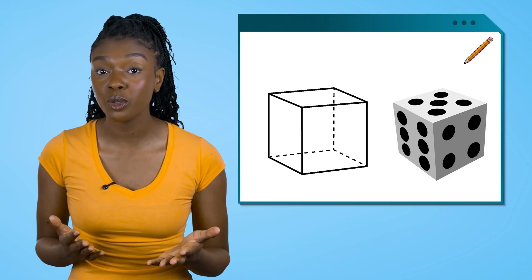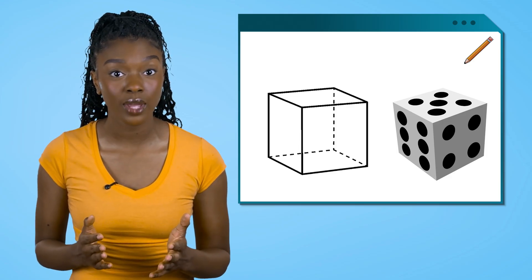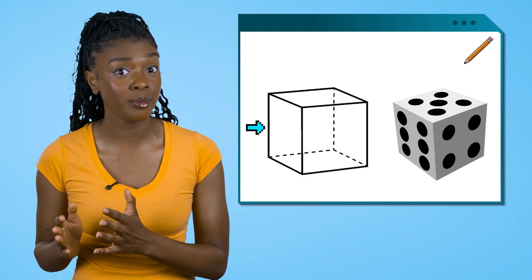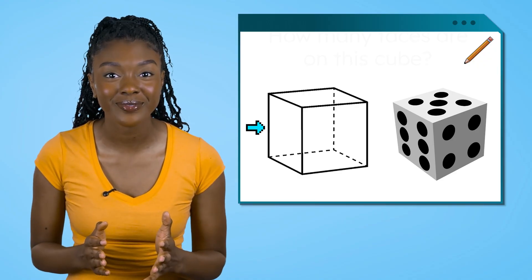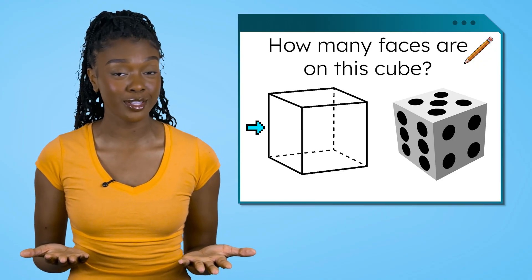Each side of a cube is a 2D square. When 2D surfaces are on a 3D shape, they're called faces. How many faces are on this cube?